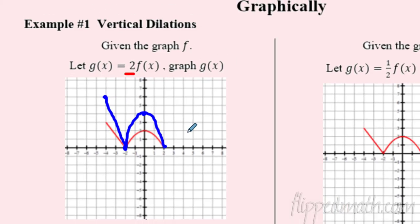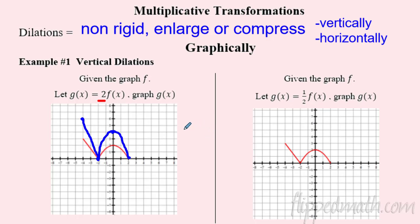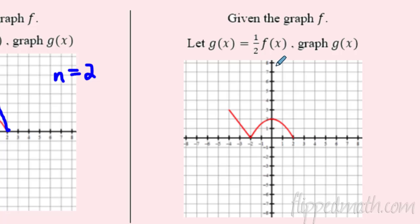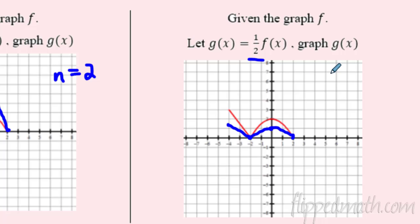I doubled all the Y values so it stretched vertically — we say it was dilated by a scale factor of two. We use n or k to show how it dilated. Can we also compress it? Sure — if I halve all my Y values: three becomes one and a half, zero stays zero, two shrinks down to one, and the last point stays at zero. That compresses, or squishes, the graph down in the Y direction. This would be a scale factor of one half.